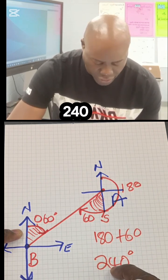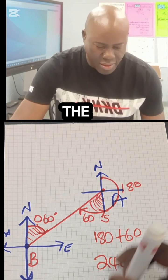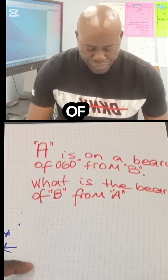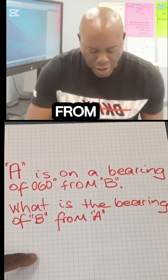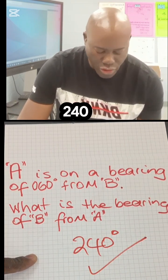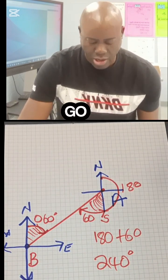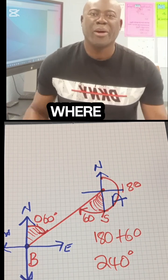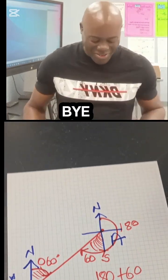This is the bearing of B from A. Bearing of B from A is 240 degrees. There you go. See you next time where we'll be looking at another problem.